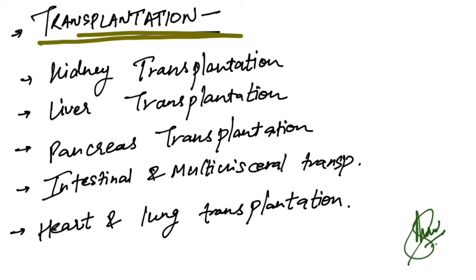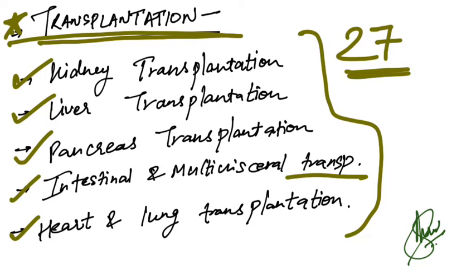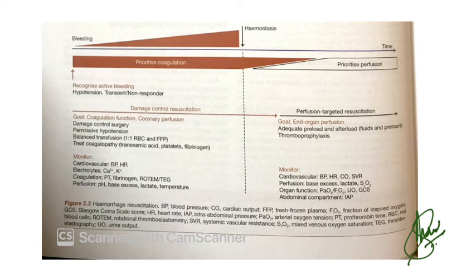A full unit of Transplantation has been added. In the 27th edition only a glimpse of transplantation was given, but now kidney transplantation, liver transplantation, pancreas, intestinal and multivisceral transplantation, and heart and lung transplant are all whole chapters added in the last unit of Transplantation.